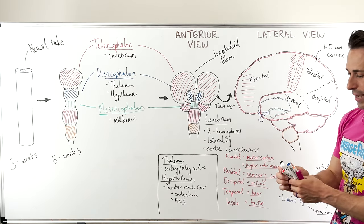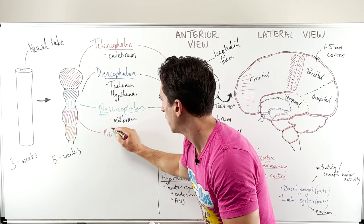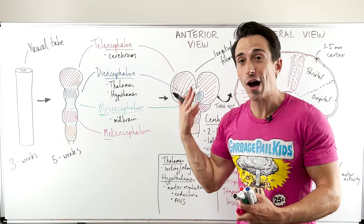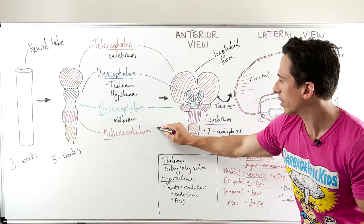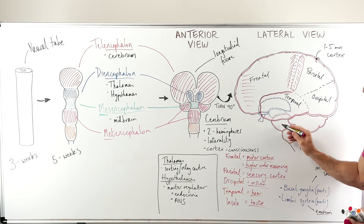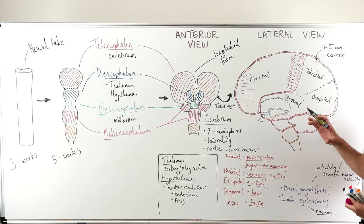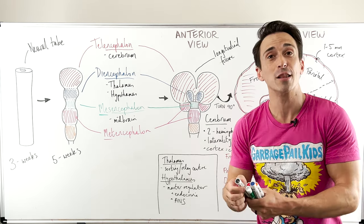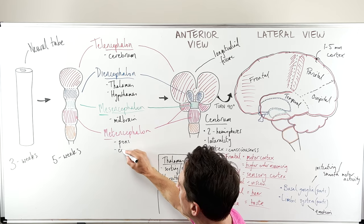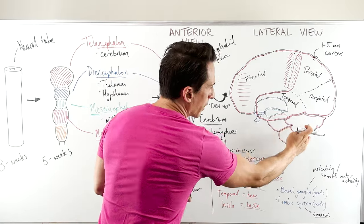The next part is the metencephalon. 'Met' actually means behind — so behind the brain. Looking at it, that's part of the metencephalon and that's part of the metencephalon — here and here from the lateral view. You can see that's the pons and that's the cerebellum, which is sitting behind the brain. So the metencephalon contains the pons, which is the next part of the brainstem, but also the cerebellum.